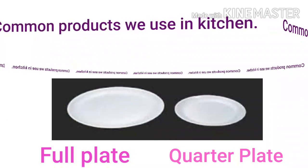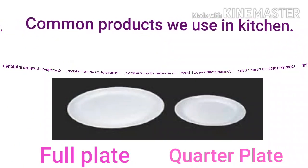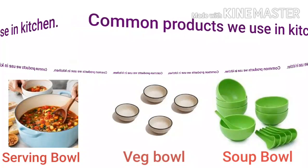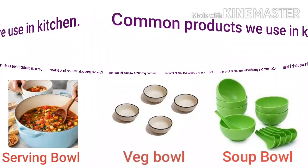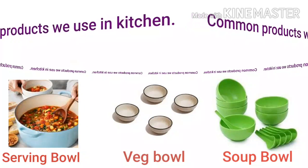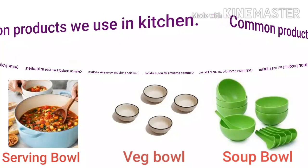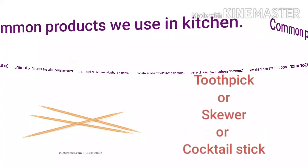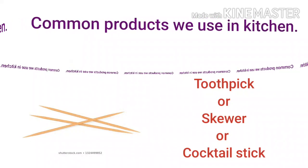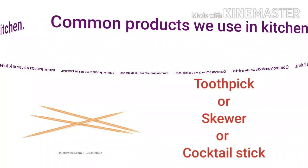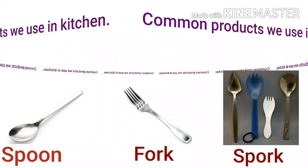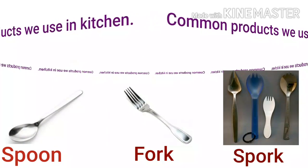The difference between full plate and quarter plate — which half plate hoti hai, usko actually hum quarter plate bolte hai. Next we have three kinds of bowls: jo bada bowl hota usko serving bowl bolte hai, jisme hum dal wagera daalte hai that is known as vegetable bowl, and the third one is the soup bowl. Toothpicks ko hum do aur naam se jaan sakte hai: skewer and cocktail stick — it is not only called toothpick.